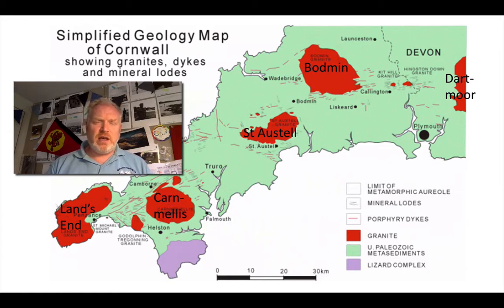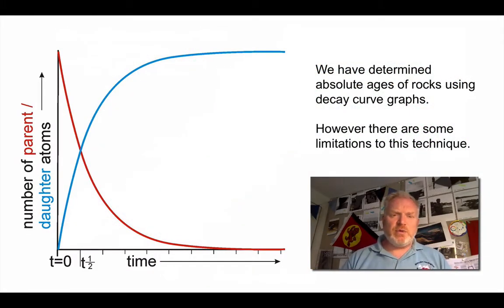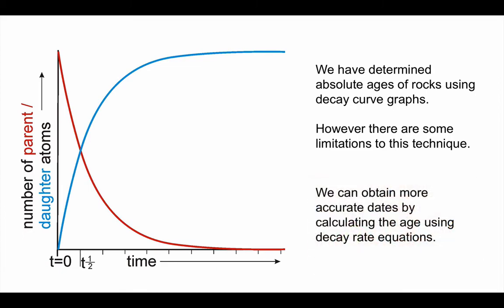We can relatively date them, looking at the rocks that they cut and have metamorphosed. Or if we want more accurate data, we need to use radiometric dating. We've looked at radiometric dating as part of the AS level. What I want to do in this lesson is step it up a little bit. Let's start with something we're familiar with, the decay rate curve, where we see the number of parent atoms decreasing by half with every half-life, the number of daughter atoms increasing correspondingly. There are some limitations to this technique. It can be limited in terms of its accuracy, particularly with elements that have very long half-lives. To get more accurate dates, we need to actually do some calculations.